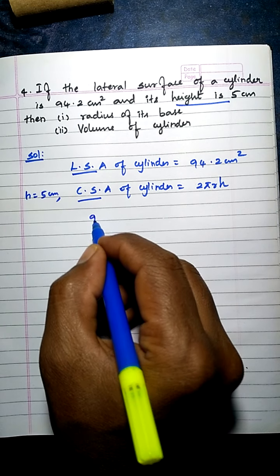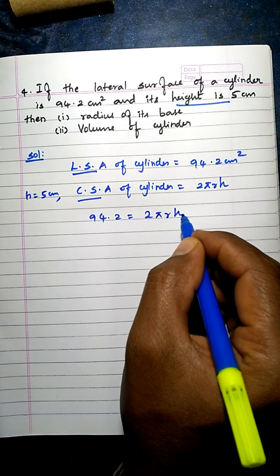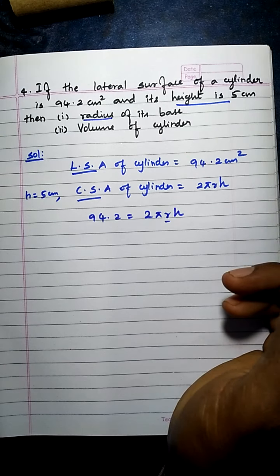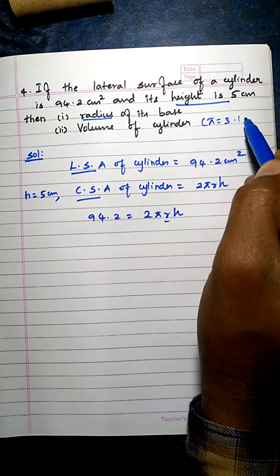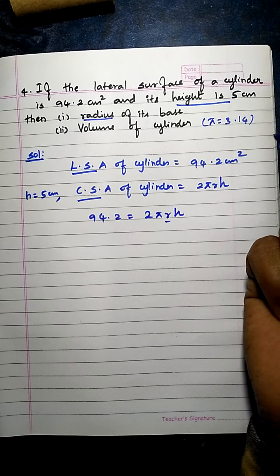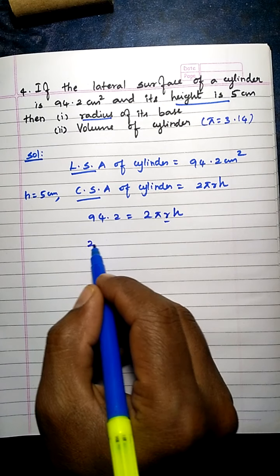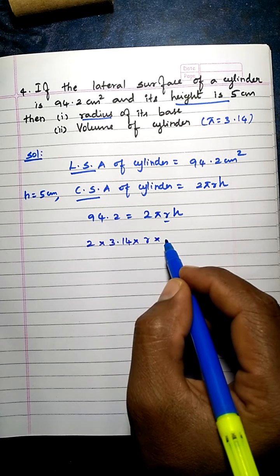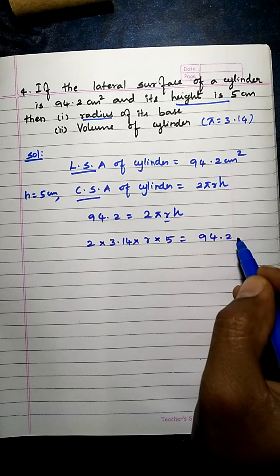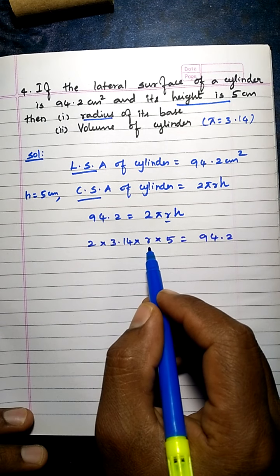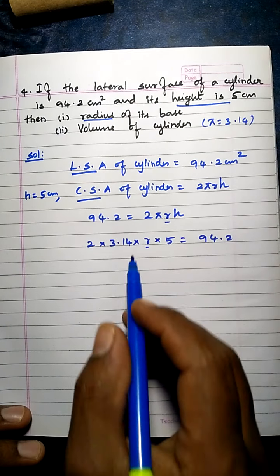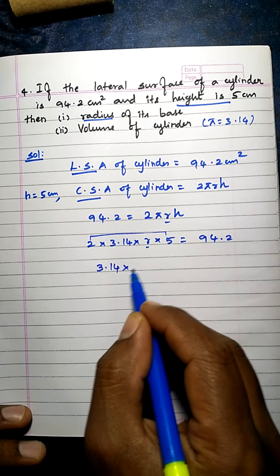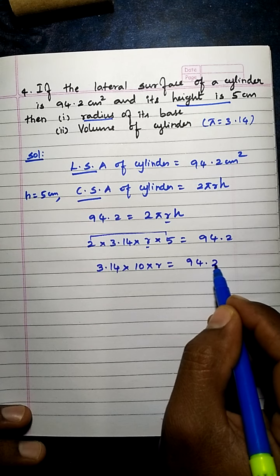We need to find the radius r first, then the volume of the cylinder. Using π = 3.14: 94.2 = 2 × 3.14 × r × 5. Multiplying 2 and 5 first gives 3.14 × 10 × r = 94.2, which simplifies to 31.4 × r = 94.2.